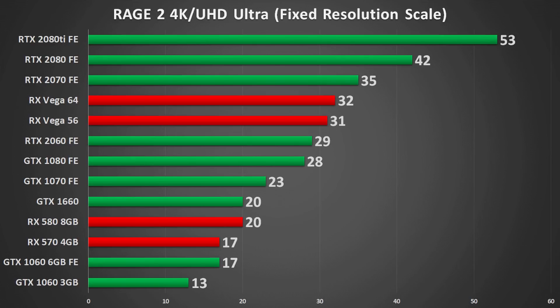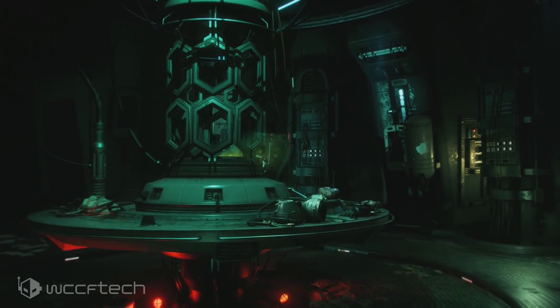At 4K, the performance hit is much more drastic. If 30fps is your target, Vega 56 is about your minimum unless you concede on graphical settings. Even the RTX 2080 Ti can't break 60fps at 4K on full settings. You could drop to medium preset and clear that mark, but anything lower than that targeting 4K will need low presets combined with resolution scaling to exceed 60fps.